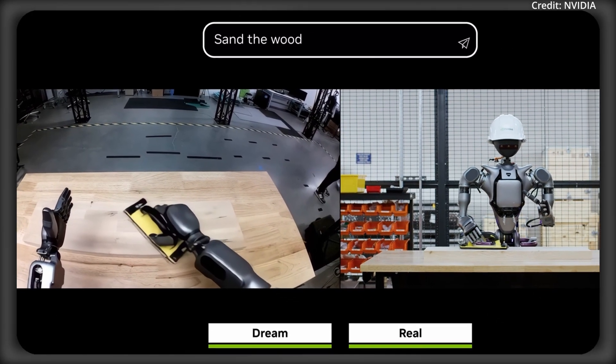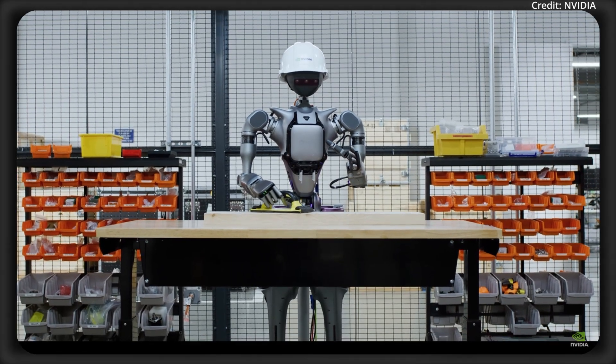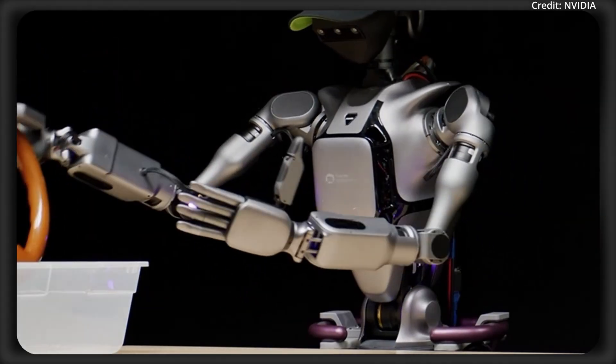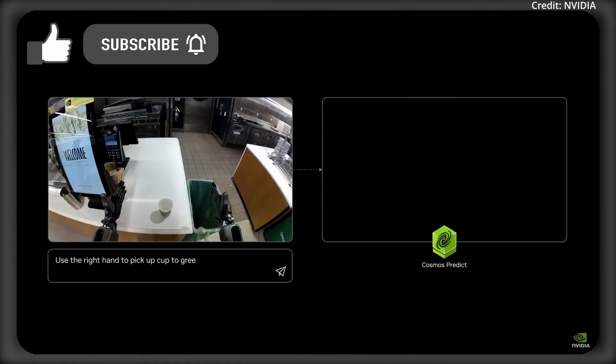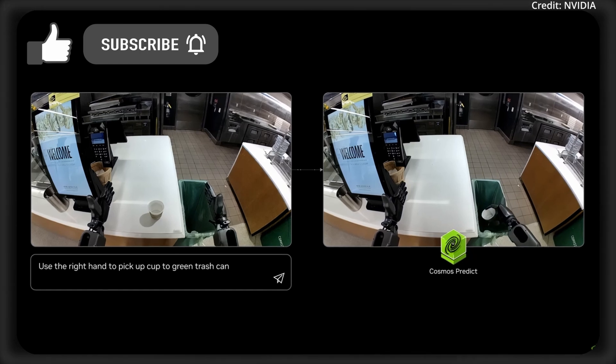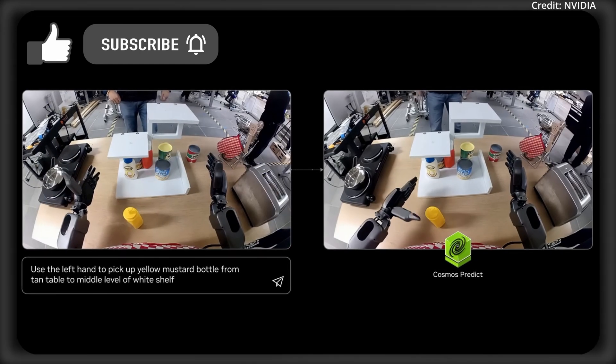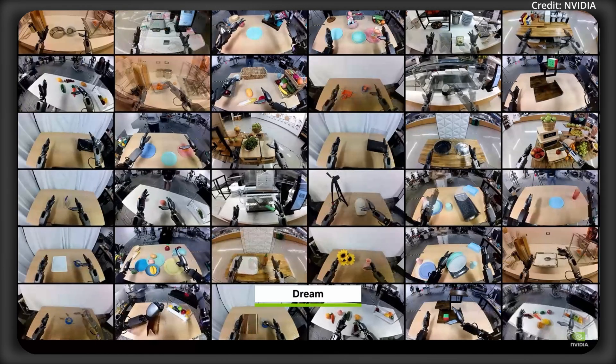But Groot Dreams is changing the game with Blueprints by finally allowing a small group of human demonstrators to teach robots at scale so that they can learn a massive range of new tasks. So now, developers can simply post-train using Cosmos Predict World Foundation models for their robots, using just a few human demonstrations recorded via teleoperation for a single task in one setting.